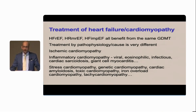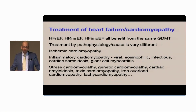For viral, typically we don't really need to address the cause. Eosinophilic depends on what's driving it. Infectious — things like Chagas or Lyme — we have to treat with antibiotics. Cardiac sarcoid requires immunosuppression, and giant cell requires mega doses of immunosuppression.